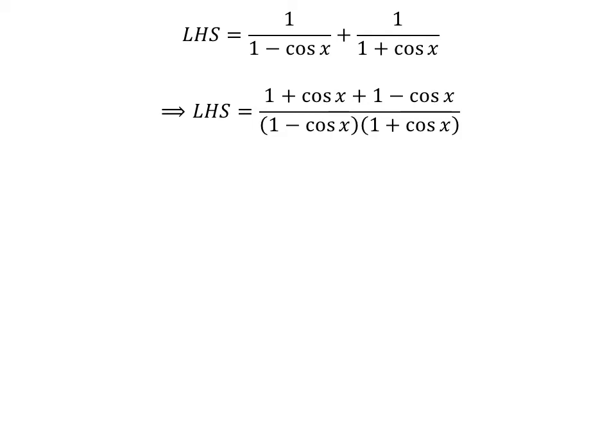Addition of the fractions gives us left-hand side of the identity is equal to 1 plus cosine of x plus 1 minus cosine of x upon 1 minus cosine of x times 1 plus cosine of x.